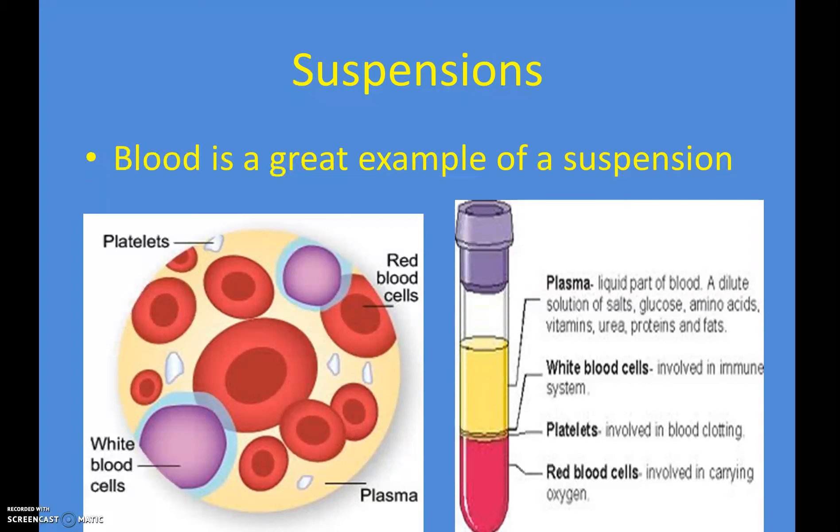Now the plasma, even though it's part of a suspension, the plasma is actually a solution too, because if you look here we have salts in our blood and a sugar called glucose and some of these other things, and those are dissolved because they're polar. So blood is actually a solution with its plasma and a suspension because it has all these things floating around in it.